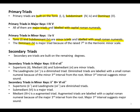In minor keys, the tonic and subdominant primary triads are minor triads, while the dominant — which is the five — will be a major triad. Why? Because of the raised seventh in the harmonic minor scale, which we'll be looking at a little later.